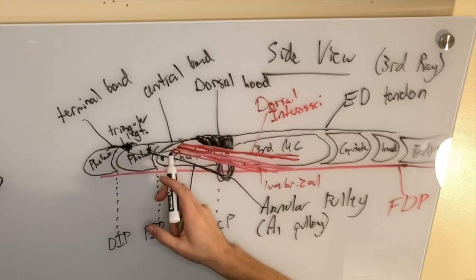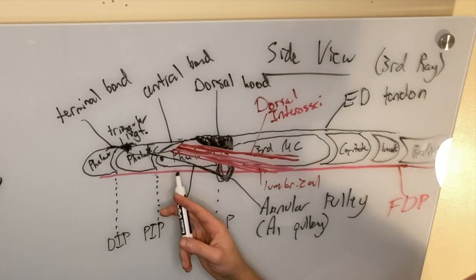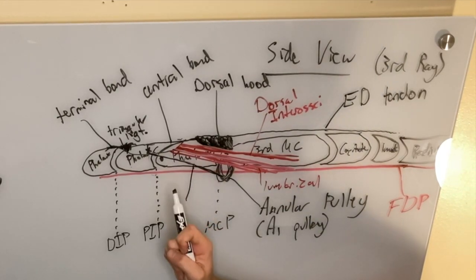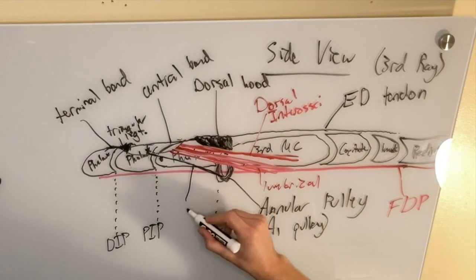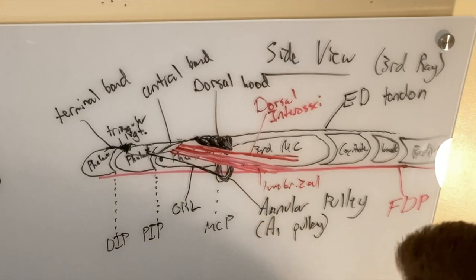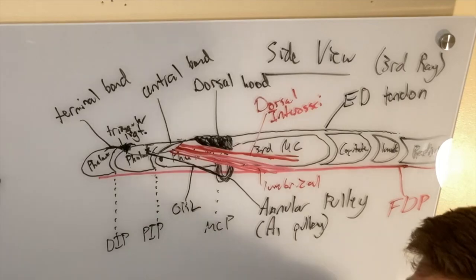goes behind on the other side of the medial lateral axis. And that's what allows full extension of your fingers. So this is the oblique retinacular ligament. And that is super crucial part in order to open your hand.